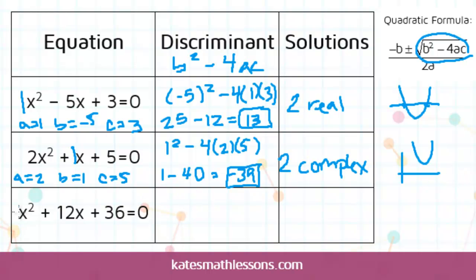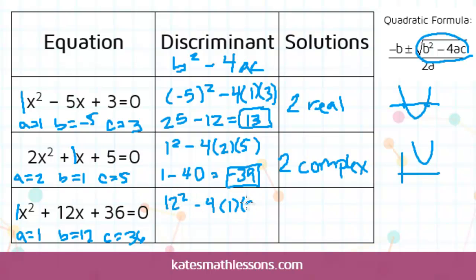Let's look at this last one. I know my a value is 1, b is 12, and c is 36. So plugging those values into the formula: b squared is 12 squared, minus 4 times a times c. 12 squared is 144; negative 4 times 1 times 36 is negative 144. So in this case, it comes out to 0.